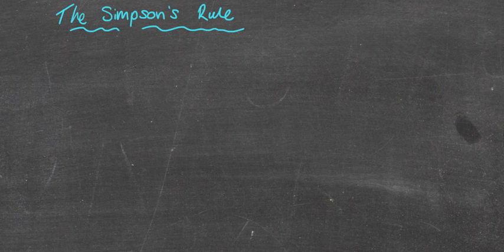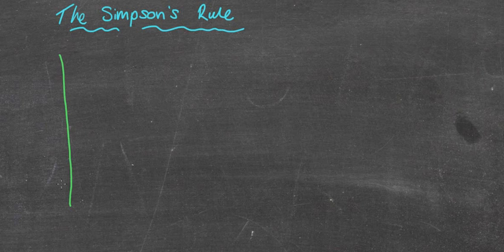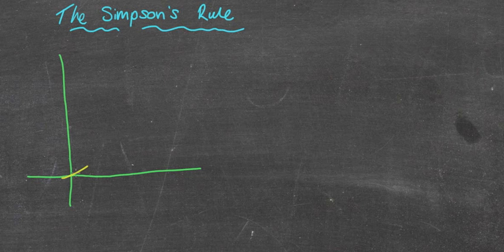Welcome to today's lesson looking at Simpson's rule. If you haven't looked at the lesson on the trapezoidal rule, please go and do that now — that's pretty crucial to understanding this rule. I'm not going to go through how to derive Simpson's rule; I will show you briefly what it is and what it allows you to do. We'll look at the graph of f(x) = x².